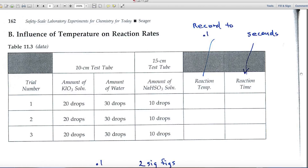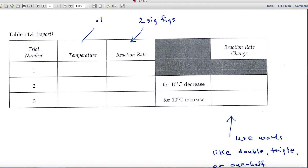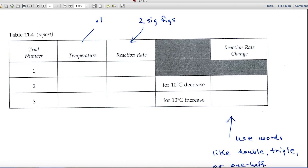In part B, the influence of temperature on reaction rates, you'll be recording temperatures. You can read the thermometers to the tenth, so be sure and record to that value. Reaction times will be recorded in seconds.